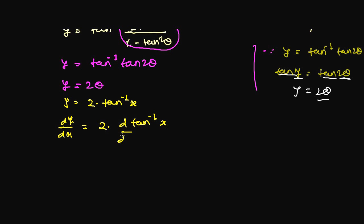And that is 2 times 1 over 1 plus x squared, that is 2 over 1 plus x squared. This is our answer.